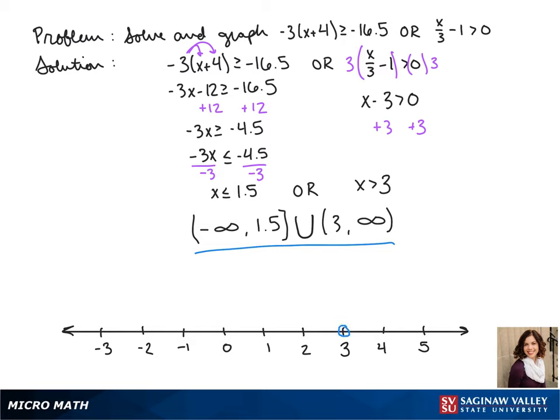So we have an open circle on 3 because that's not included in our interval and a closed circle on 1.5. And we draw an arrow left from there and an arrow right from 3.